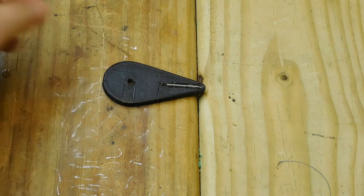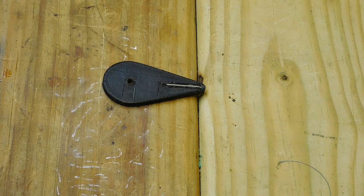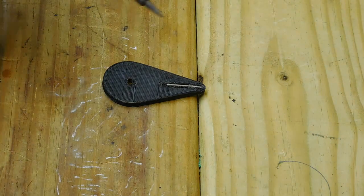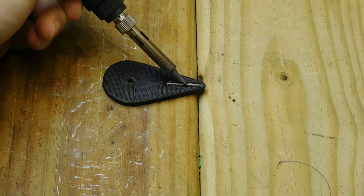At this point the pivot needs to be set. I'll do this by heating the plastic with a soldering tip. This is quick, easy and locks the nail in place.